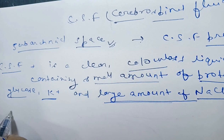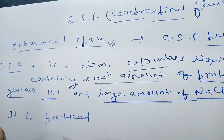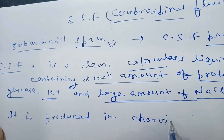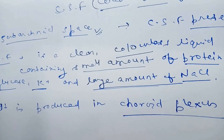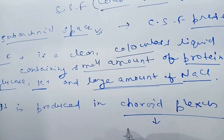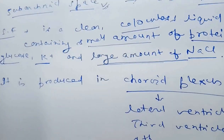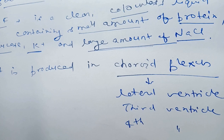How is it produced? It is produced in the choroid plexus, which are present in all the ventricles — in the lateral ventricle, the third ventricle, and the fourth ventricle.